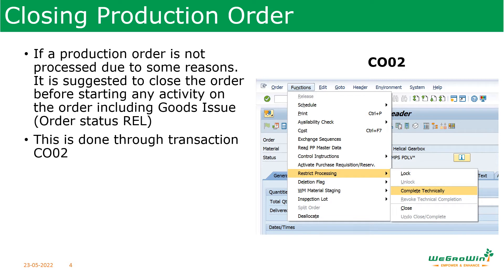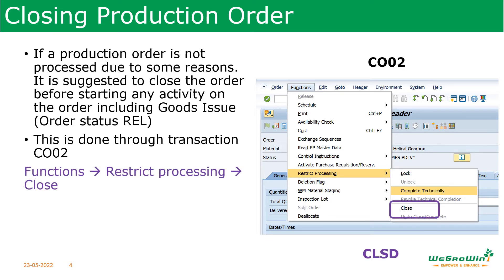This is done through transaction CO02 — change production order. When you go into change production order, you can see the function 'Restrict Processing' and there is a 'Close' option. Click it and save. The status of the production order will change to CLSD (closed). This means the capacity booking and material reservations for that order will be closed, and the order will not be considered for any other requirement.